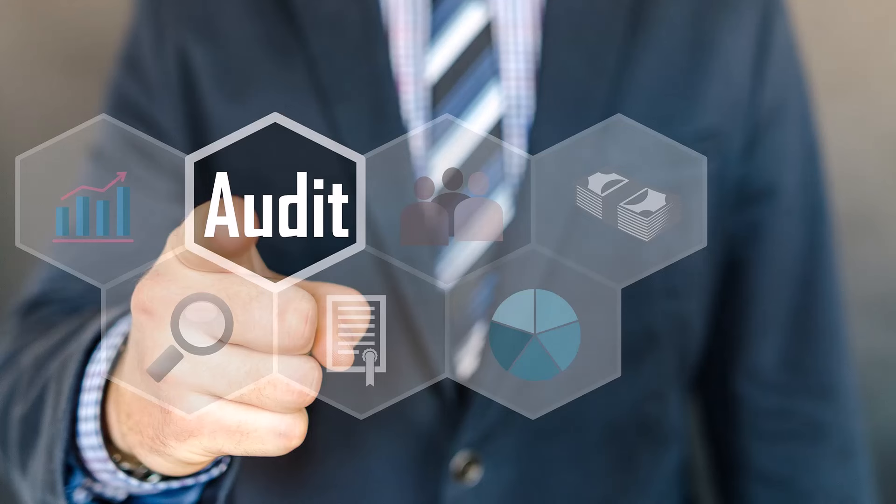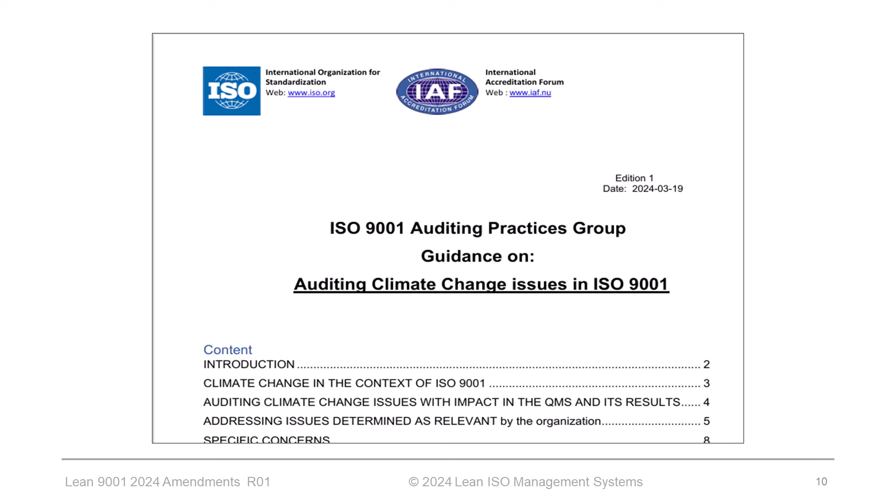After these changes have taken effect, expect your certification body auditors to ask you about climate change considerations. Speaking about auditing, on March 19, 2024, ISO and IAF — the ISO 9001 Auditing Practices Group — issued guidance on auditing climate change issues in ISO 9001. I found this document overwhelmingly wordy and pointless, but if you are interested, the link is in the description below.